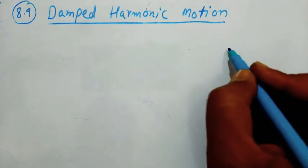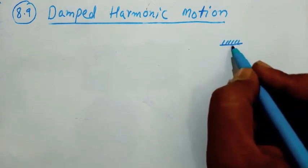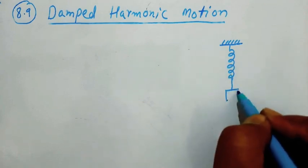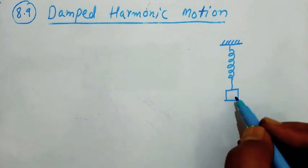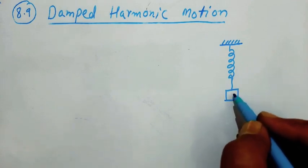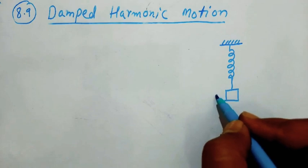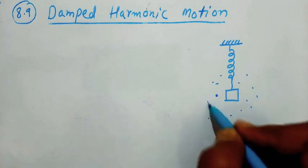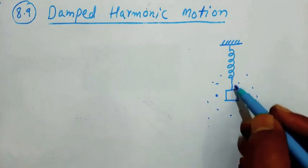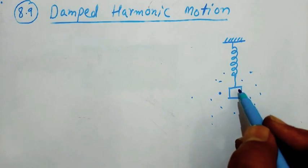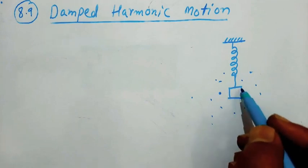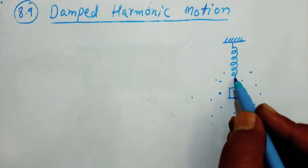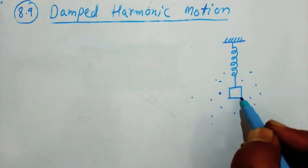In a spring-block system, the block is oscillating vertically. If the block is pulled down, here the block oscillates about the mean position. Due to the presence of air resistance, after some time the block comes to rest. How many forces are acting on the block? Two forces are acting on the block: one is spring force and another one is damping force.